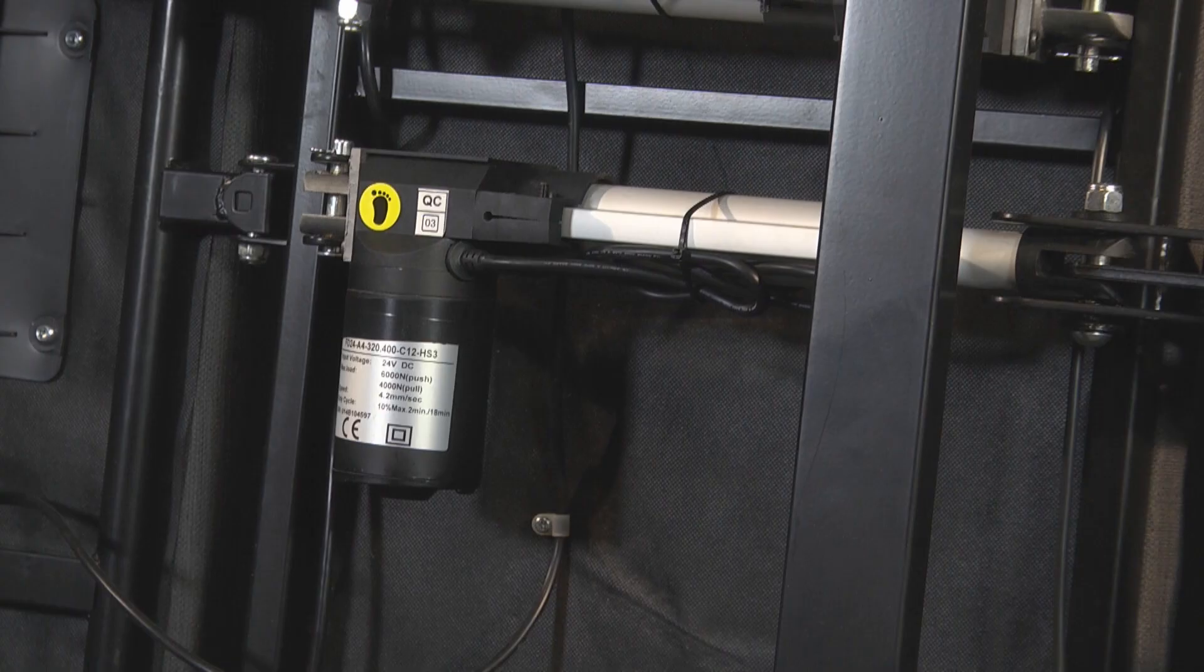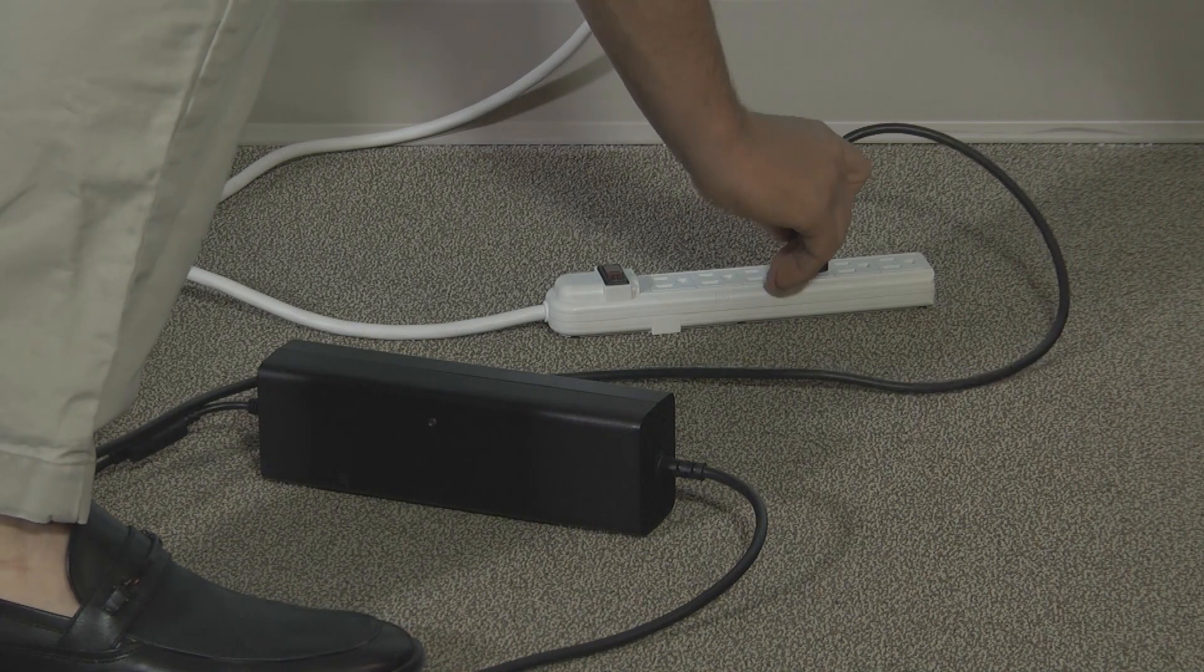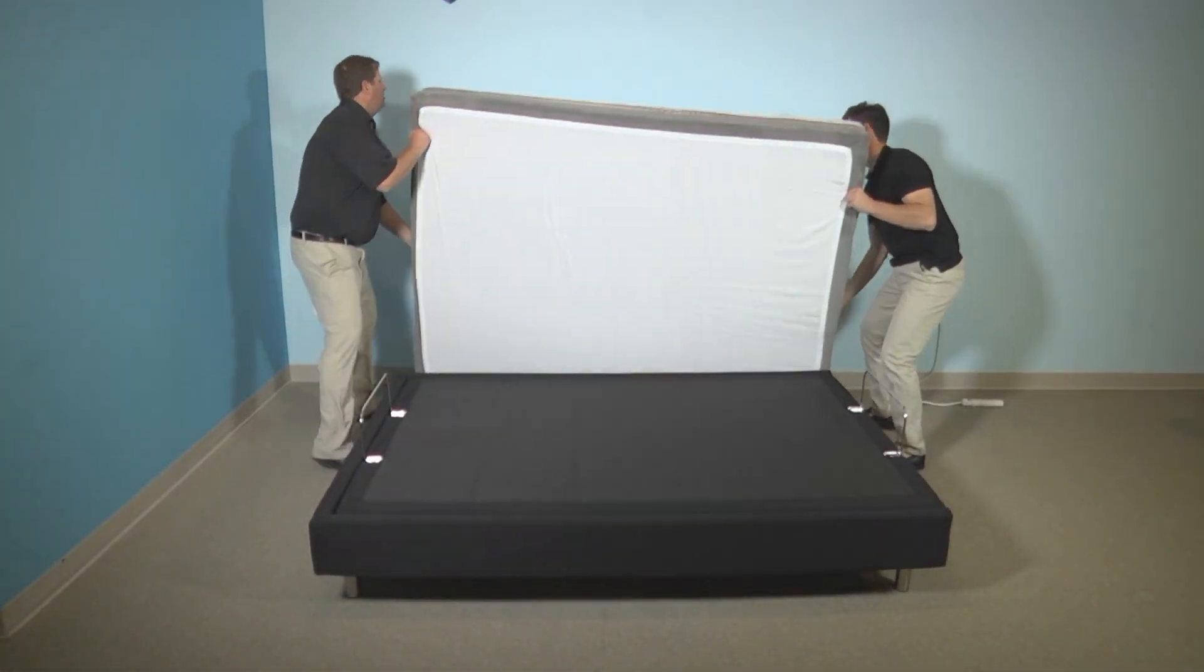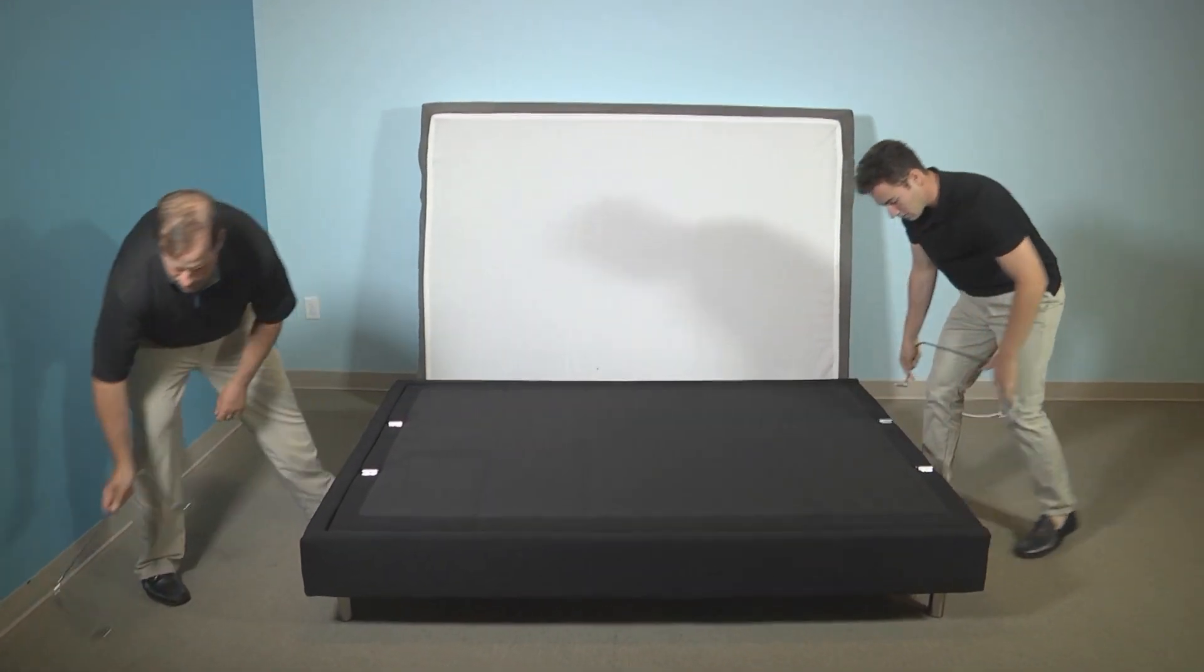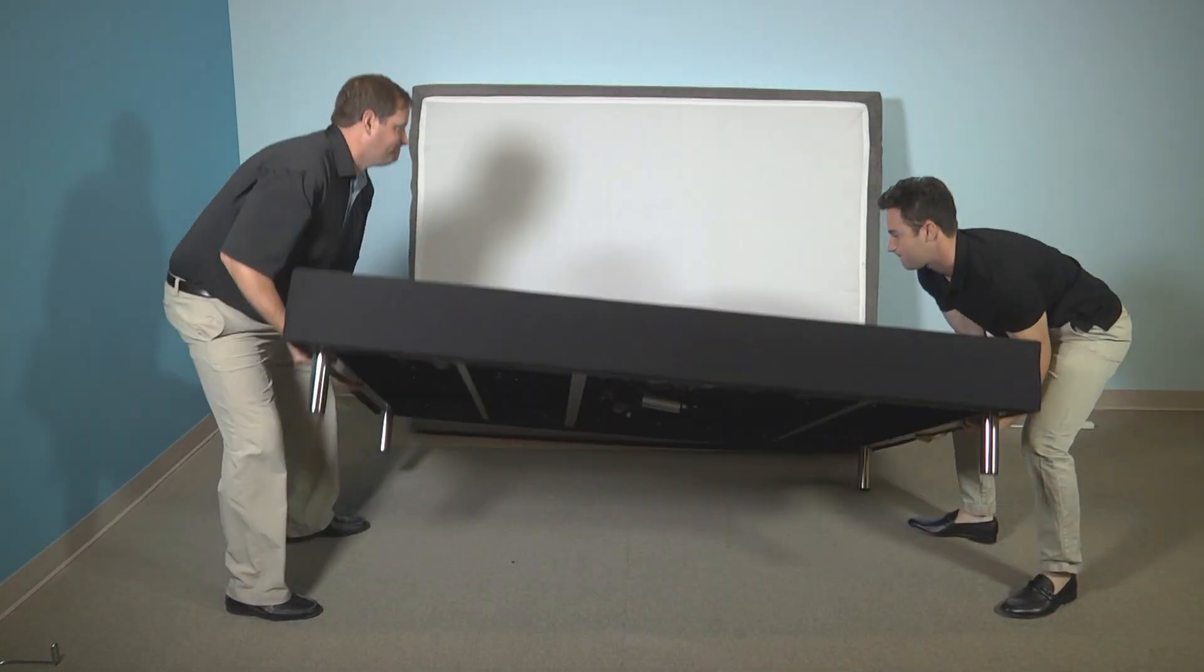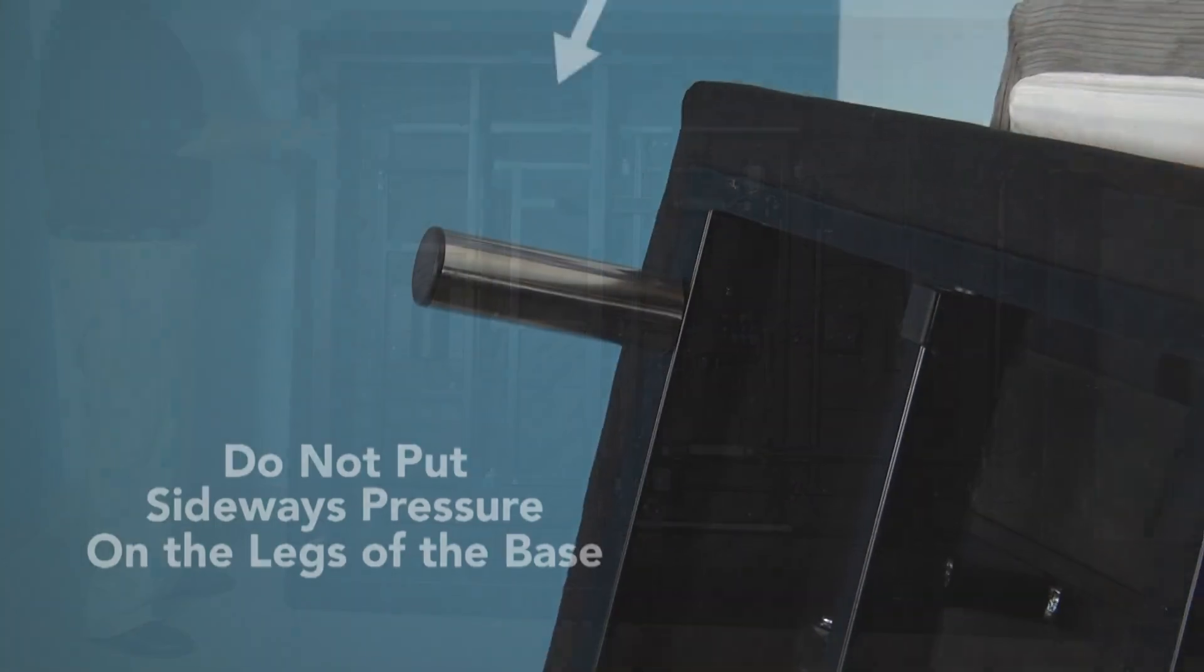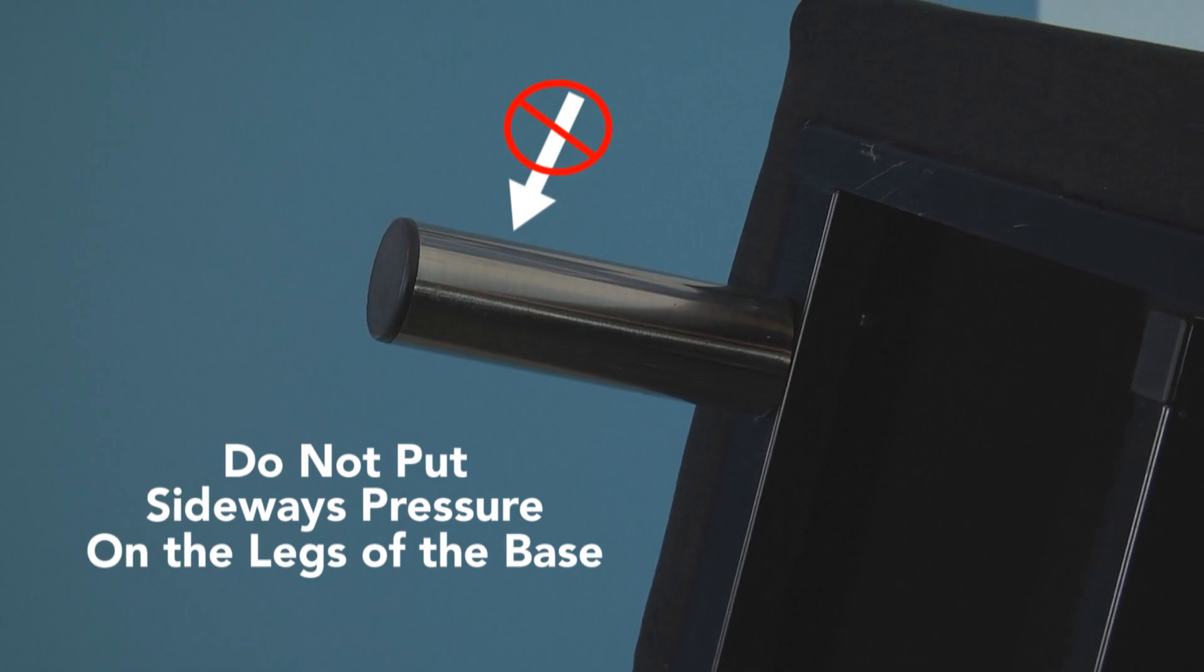If you need to replace it, follow these simple steps. First, unplug your adjustable base from all electrical connections and then remove the mattress from on top of the adjustable base. Next, turn your base over on its side or its back if that's safer. This should be performed by two people. Be careful not to put sideways pressure on the legs of the base to prevent them from bending or breaking.